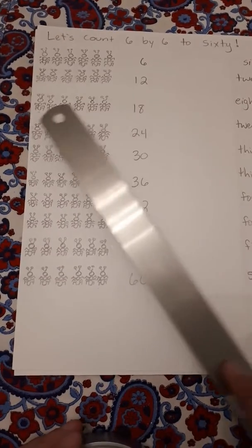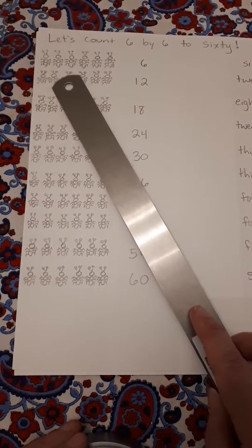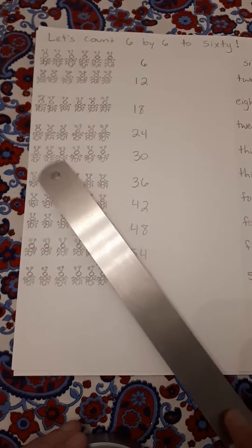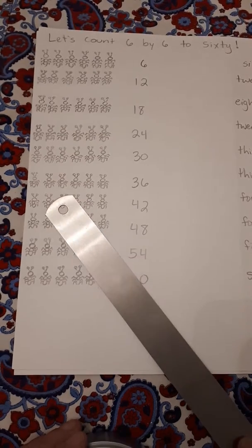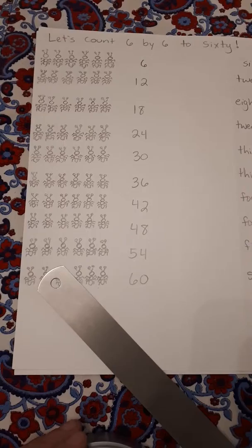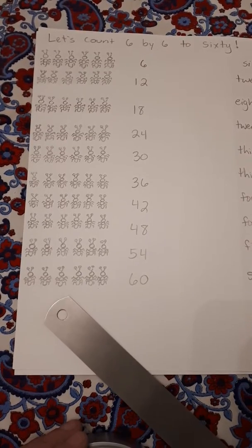Look at the ants. Six, twelve, eighteen, twenty-four, thirty, thirty-six, forty-two, forty-eight, fifty-four, sixty.